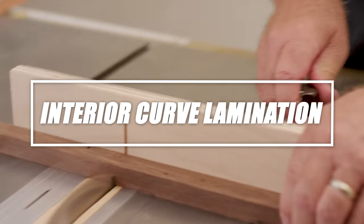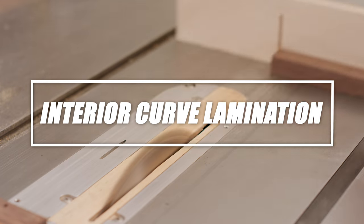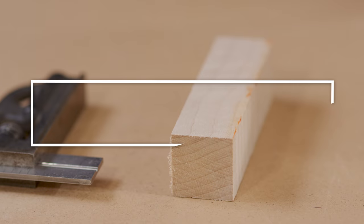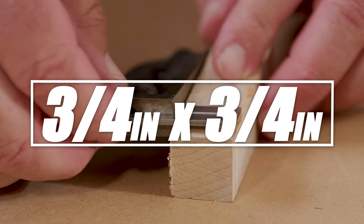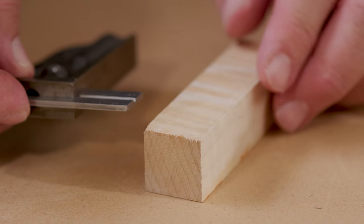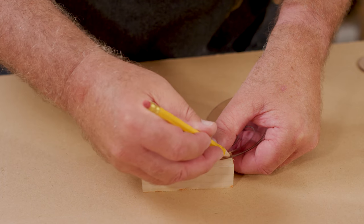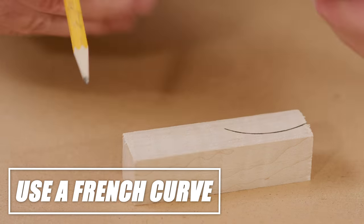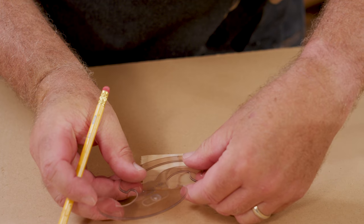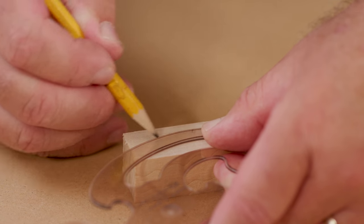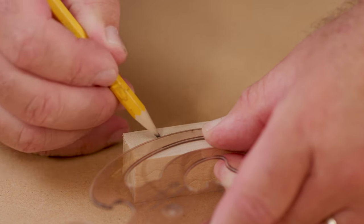To create a lamination with interior curves, start by cutting several blanks to a minimum of 3 quarter inches by 3 quarter inches by the appropriate length for your needed blank, plus half an inch. Use a French curve or other curved edge to mark a smooth continuous curve on one surface of each blank. Or, if you have a steady hand, mark the curve freehand. Mark a curve on the adjacent surface.